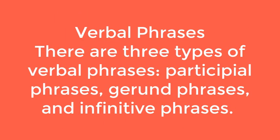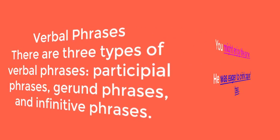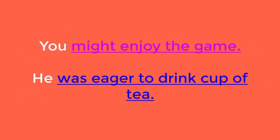There are three types of verbal phrases: participle phrases, gerund phrases, and infinitive phrases. Examples: 'You might enjoy the game' — 'might enjoy the game' is a verbal phrase. 'He was eager to drink a cup of tea' — you can see a verbal phrase in that sentence as well.